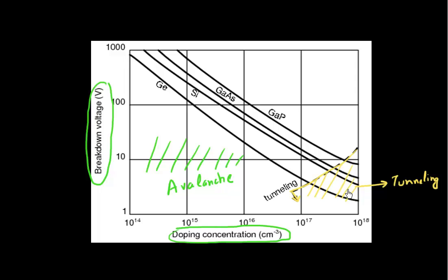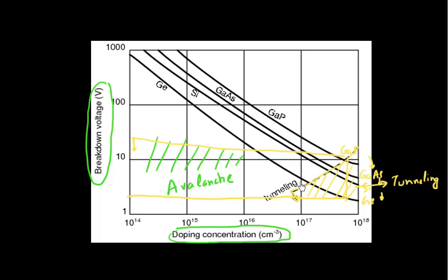You also see that even when you're limited by tunneling, if you reduce your band gap — going from gallium phosphide, to gallium arsenide, to silicon, to germanium — as you're reducing your band gap, you're also reducing the breakdown voltage. So if you compare the breakdown voltage for gallium phosphide versus germanium at the same doping, germanium has a much lower breakdown voltage. So by both increasing the doping — going to a highly doped region — and by reducing the band gap of the semiconductor making the p-n junction, you're favoring this tunneling mechanism, or you're favoring Zener breakdown.